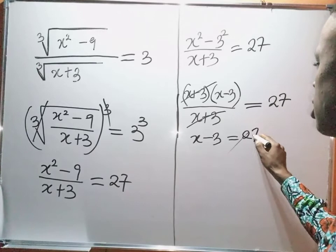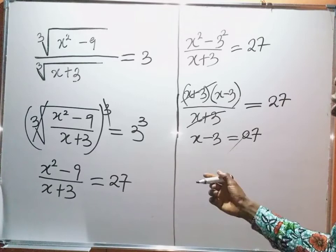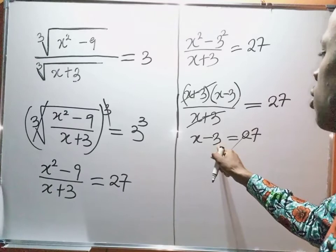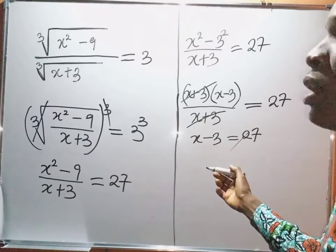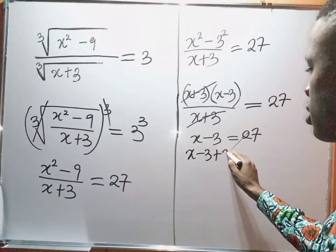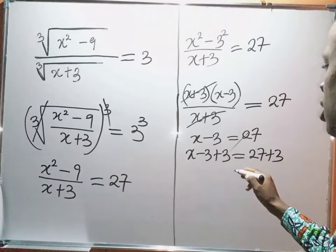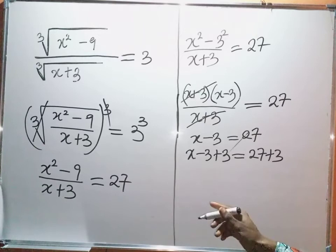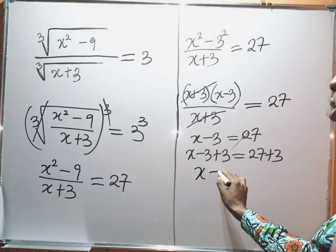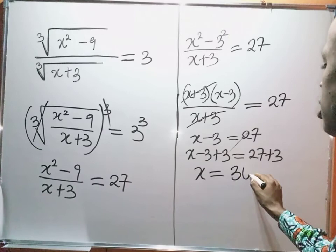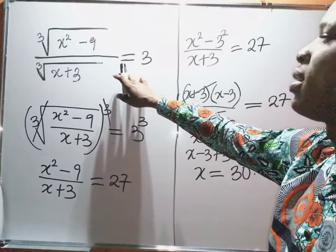So for us to be able to find the value of x, I have x minus 3 equal to 27. I add 3 to both sides: x minus 3 plus 3 equals 27 plus 3. The minus 3 and plus 3 cancel to zero, and 27 plus 3 is 30. So the value of x that satisfies this equation is x equals 30.